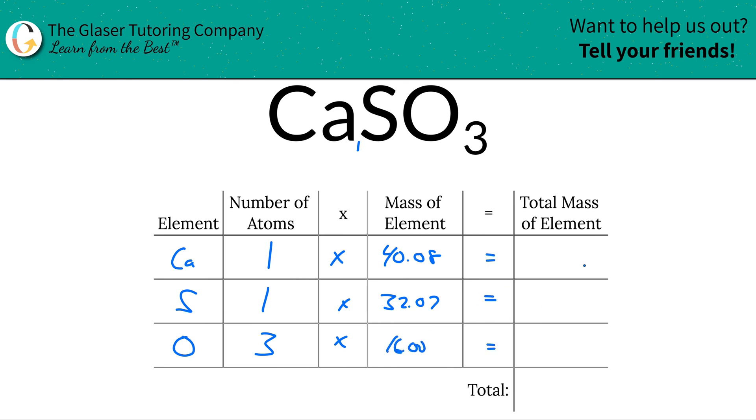Then to find the total mass of each element in the compound here, we're going to take the mass of that element and multiply it by the number of atoms of that particular element. So the total mass of calcium here is 40.08. That's easy. Total mass of sulfur is going to be 32.07. Total mass of oxygen then is 16 times 3. So now that works out to be 48.